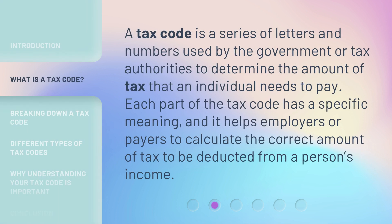A tax code is a series of letters and numbers used by the government or tax authorities to determine the amount of tax that an individual needs to pay. Each part of the tax code has a specific meaning, and it helps employers or payers to calculate the correct amount of tax to be deducted from a person's income.